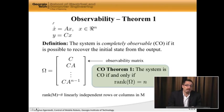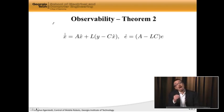As before, the rank is simply the number of linearly independent rows or columns of the matrix omega in this case. Now, we have the second theorem. It follows directly in the same way as it did for controllability.